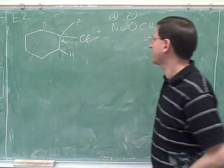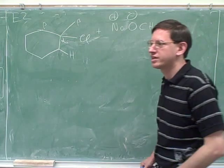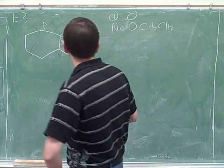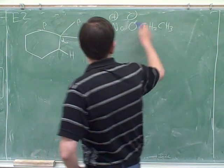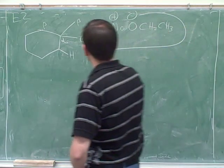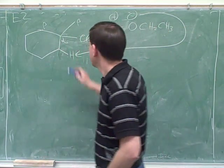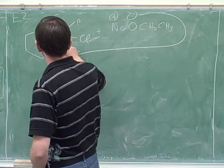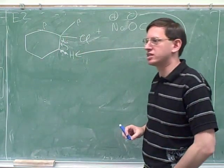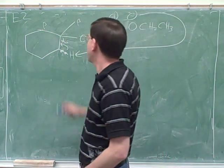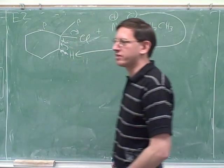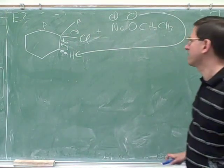We talked about how E2 is actually very complicated because there's three arrows at once. What are the three things that are happening? Well, the three things that are happening are the base steals the beta hydrogen. That frees up these electrons to form the pi bond. Remember, that's what elimination means, forming a pi bond. Well, that forces the leaving group to leave. So these three things have to happen, and they're all happening simultaneously.